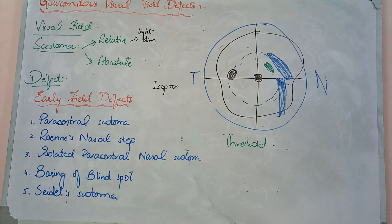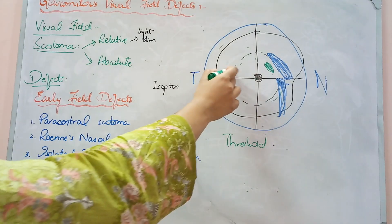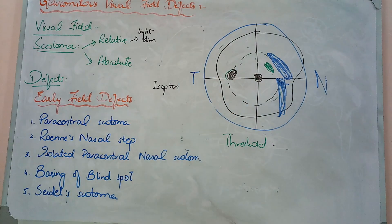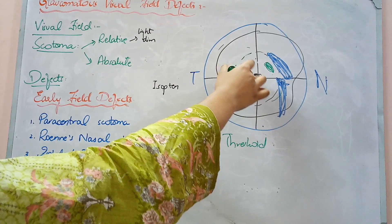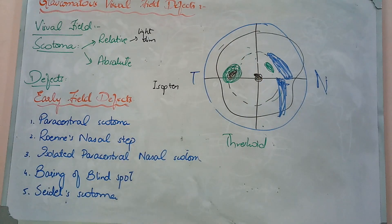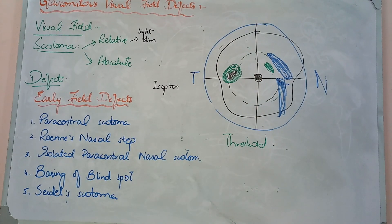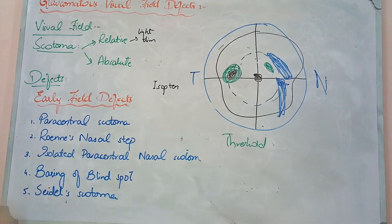We have another thing: enlargement of the blind spot. Enlargement of the blind spot means that if you have a normal physiological blind spot and the nerve fibers degenerate, the blind spot should enlarge. The normal blind spot will increase in size. So this process — your blind spot, from the first physiological point, will increase. We say this process is called enlargement of the blind spot, and this is one of the earliest changes in glaucoma.